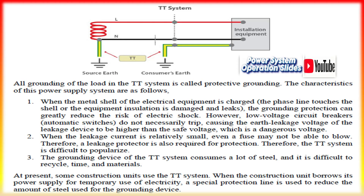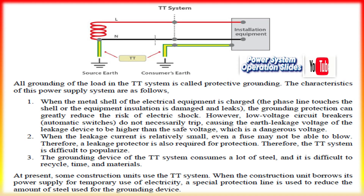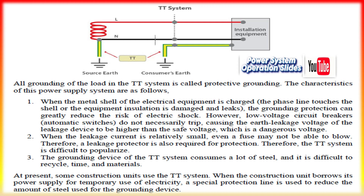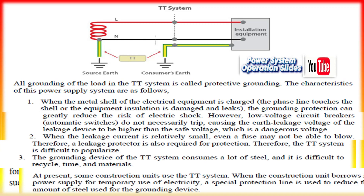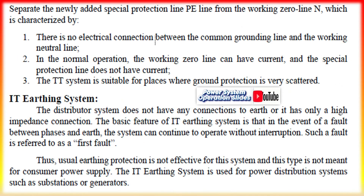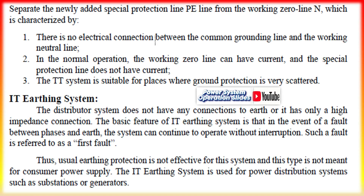Applications and considerations: TT systems are often preferred where independent protection is needed and where the connection to earth may be more reliably controlled on-site, common in rural or telecom installations. IT systems find favor in critical environments where continuity is paramount even in the event of a fault. TN systems, particularly TNS and TNCS, are widely used in urban and industrial installations for their balance of safety, ease of fault clearing, and cost-effectiveness. Remote areas use TT where the cost of an additional PE conductor outweighs that of a local earth connection.